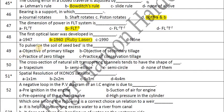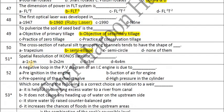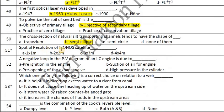To pulverize soil for preparation of a seedbed is the objective of secondary tillage. The cross section of a natural silt-transporting channel tends to have the shape of a semi-ellipse. The spatial resolution of the IKONOS satellite is 4 by 4 meters.